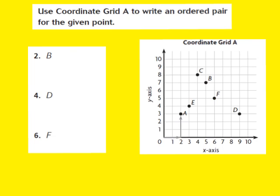Let's take a look at this first slide together. It says use coordinate grid A to write an ordered pair for the given point. On our coordinate grid, I want to talk about the x-axis — it runs horizontal. I always have to move along the x-axis first, before I move up the y-axis. A nice easy way to remember that: x comes before y in the alphabet. This point right here is called the origin, and at the origin the ordered pair is 0, 0. That's where we always start from.